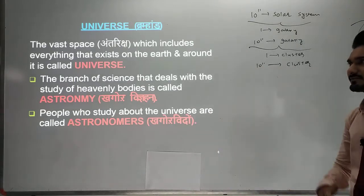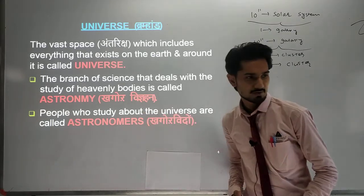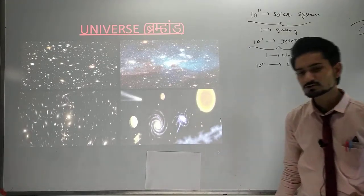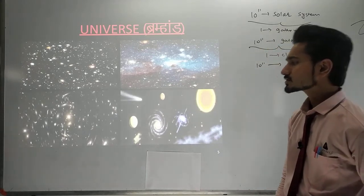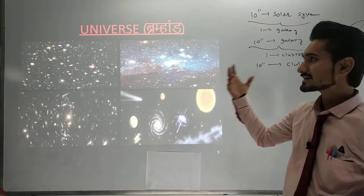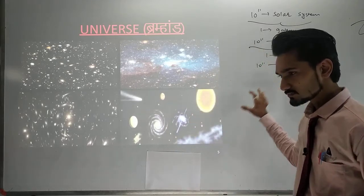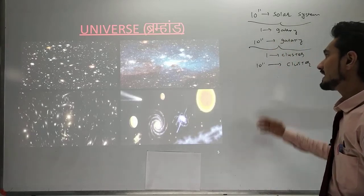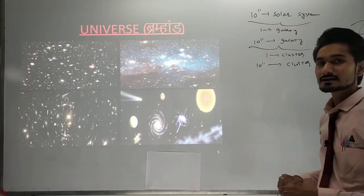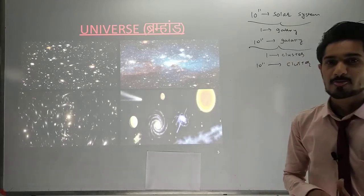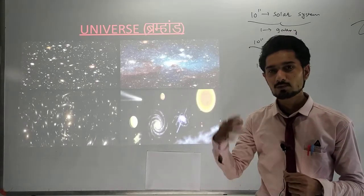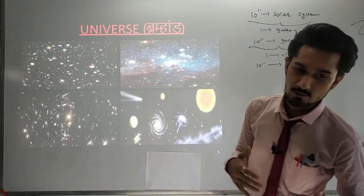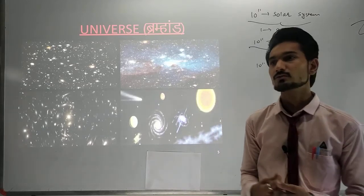So these are the three basic definitions — universe, astronomy, and astronomers. The universe is called 'Brahman' in Hindi and also in Gujarati. There are lots of galaxies present, and as I said, 10 raised to 11 solar systems are in each individual galaxy. So not only us, but many more living beings or things may be present in our universe.